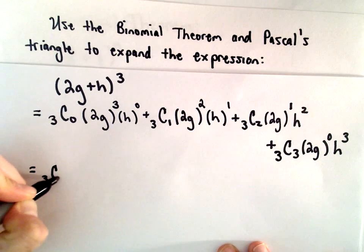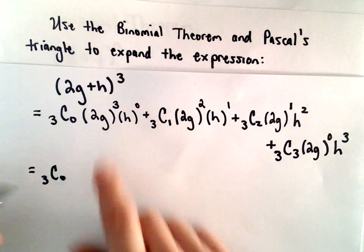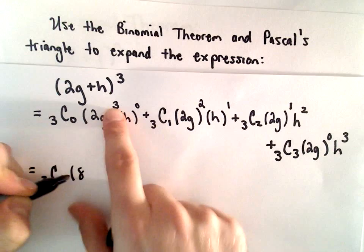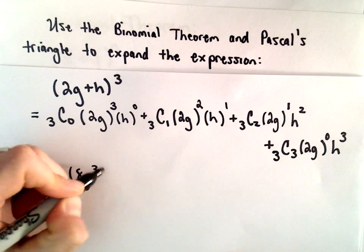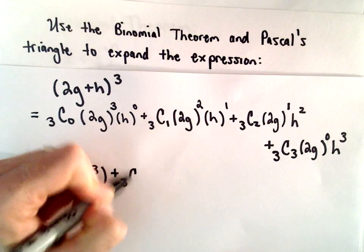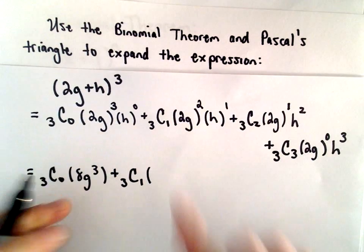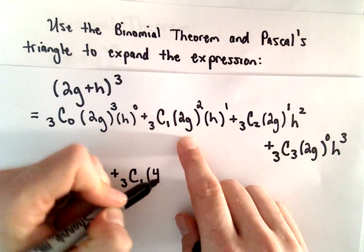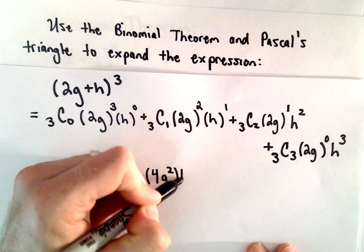Okay, so we've got 3 choose 0. 2 to the third would be 8. g to the third is just g to the third. Plus, we've got 3 choose 1. 2 squared is 4. And then we'll have g squared multiplied by h.